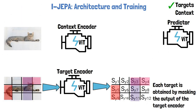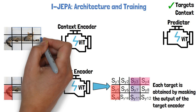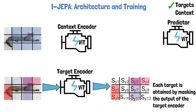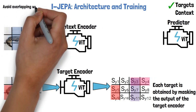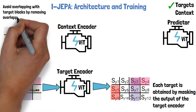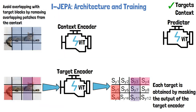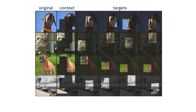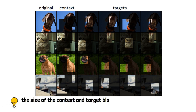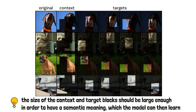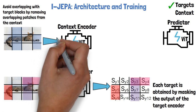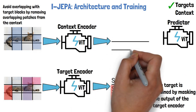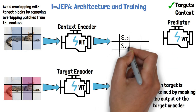To create the context block we take the input image, divide it into non-overlapping patches, and sample part of it as the context block. The sampled context block is significantly larger than the target blocks and sampled independently from them, so there can be significant overlap. To avoid trivial prediction, each overlapping patch is removed from the context block, leaving a smaller context block — as shown in examples from the paper. We then feed the context block through the context encoder to get patch-level representations, marked as SX with the patch number.